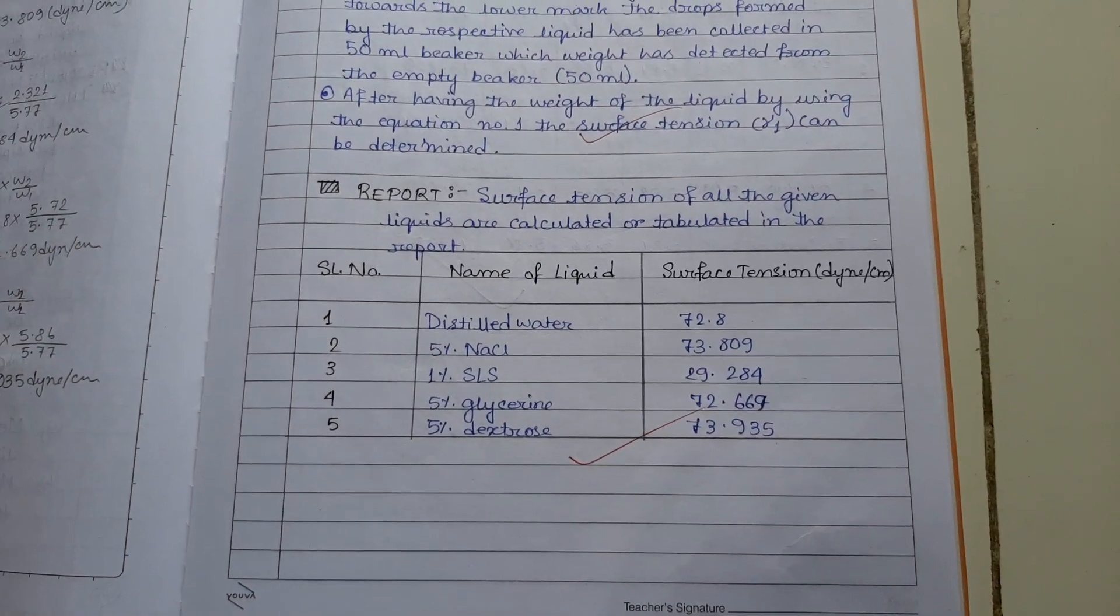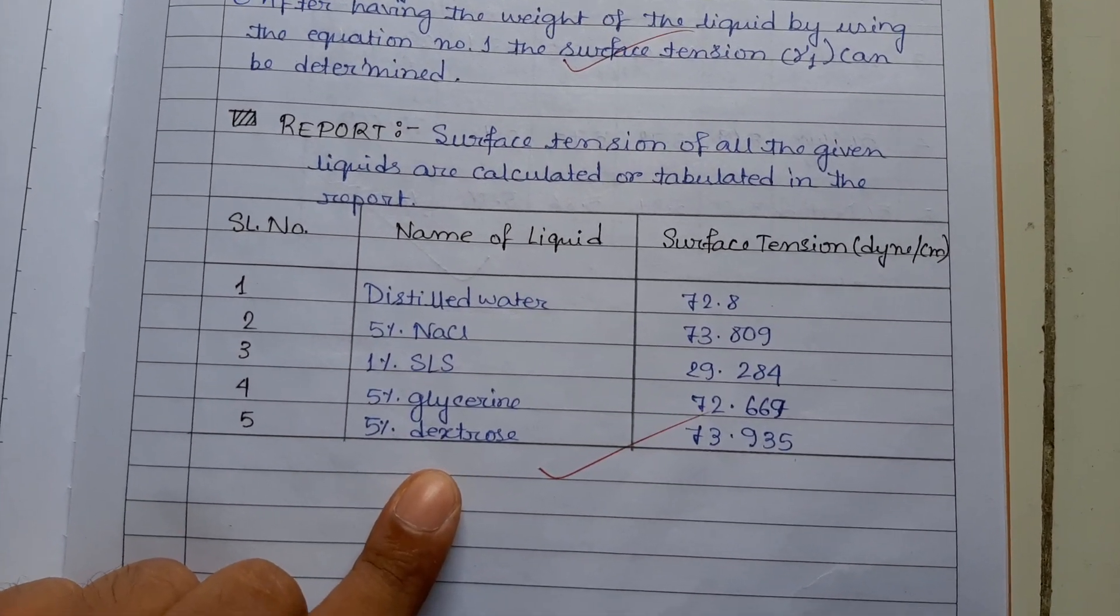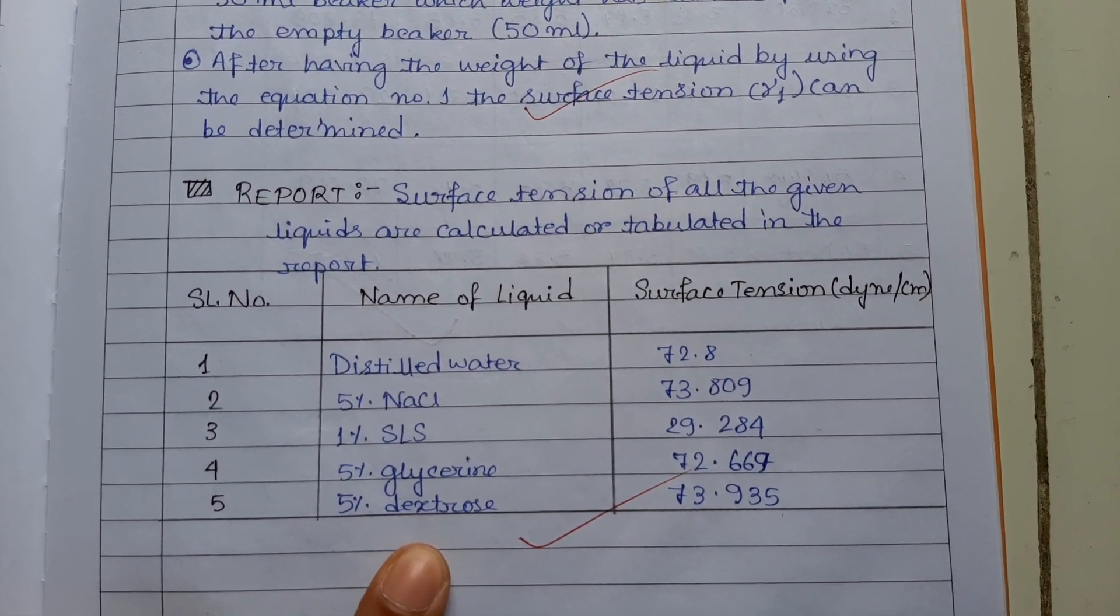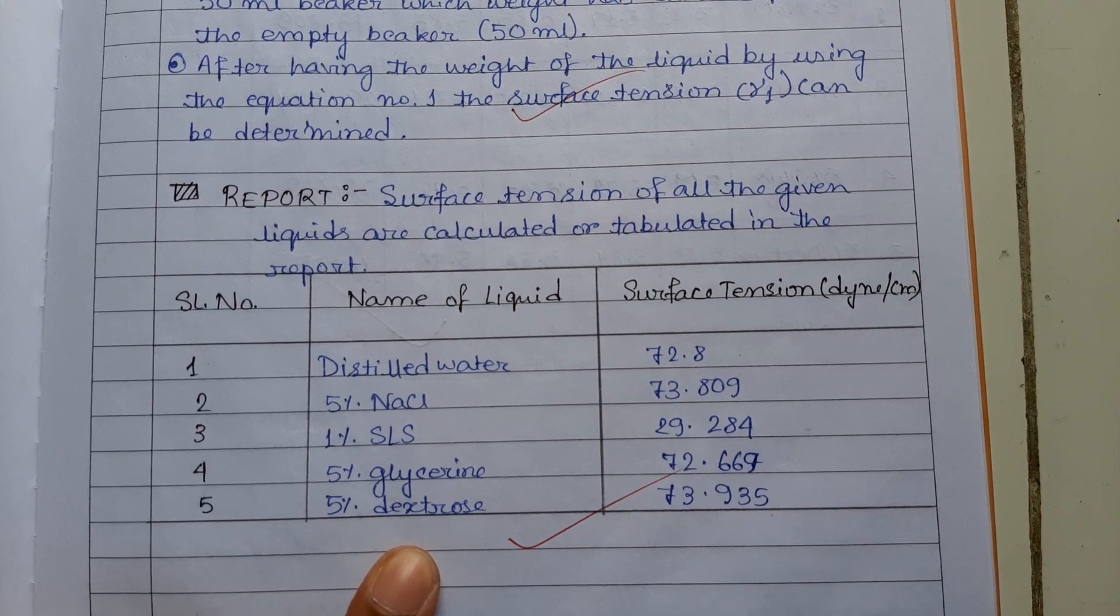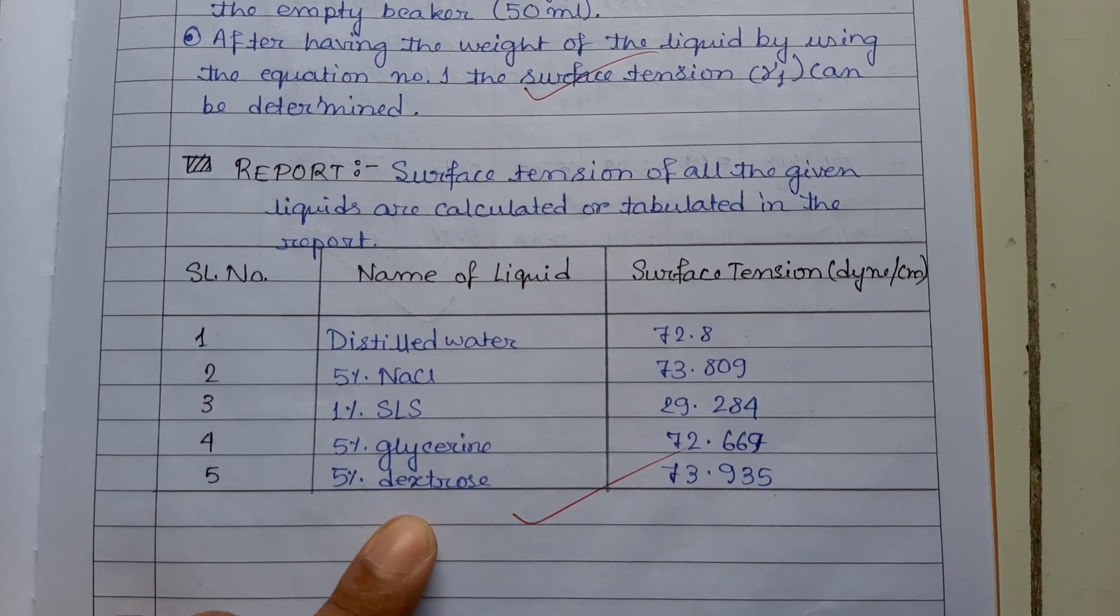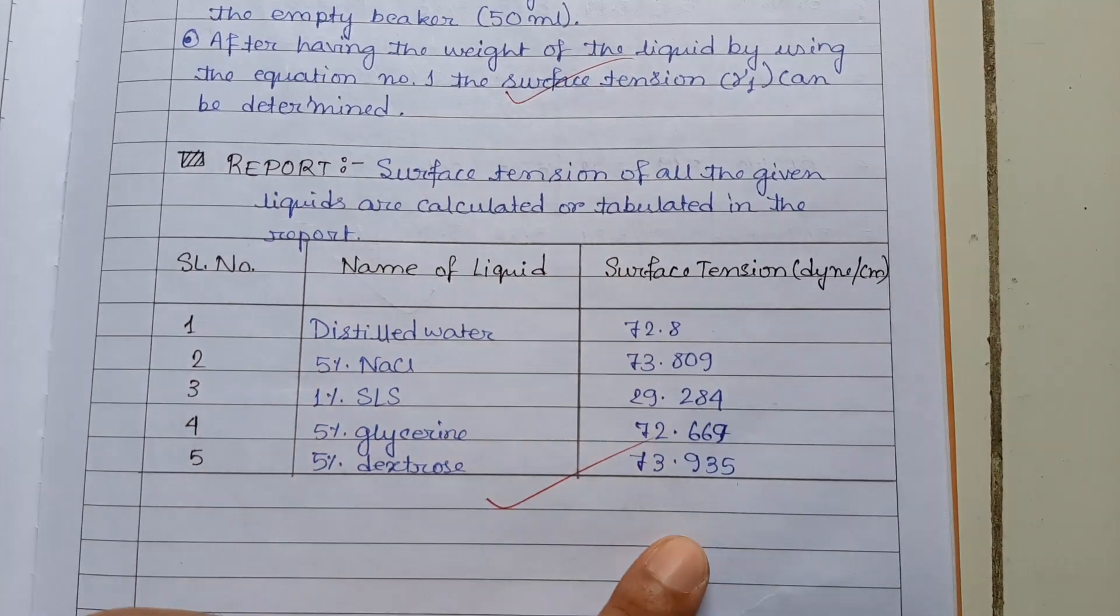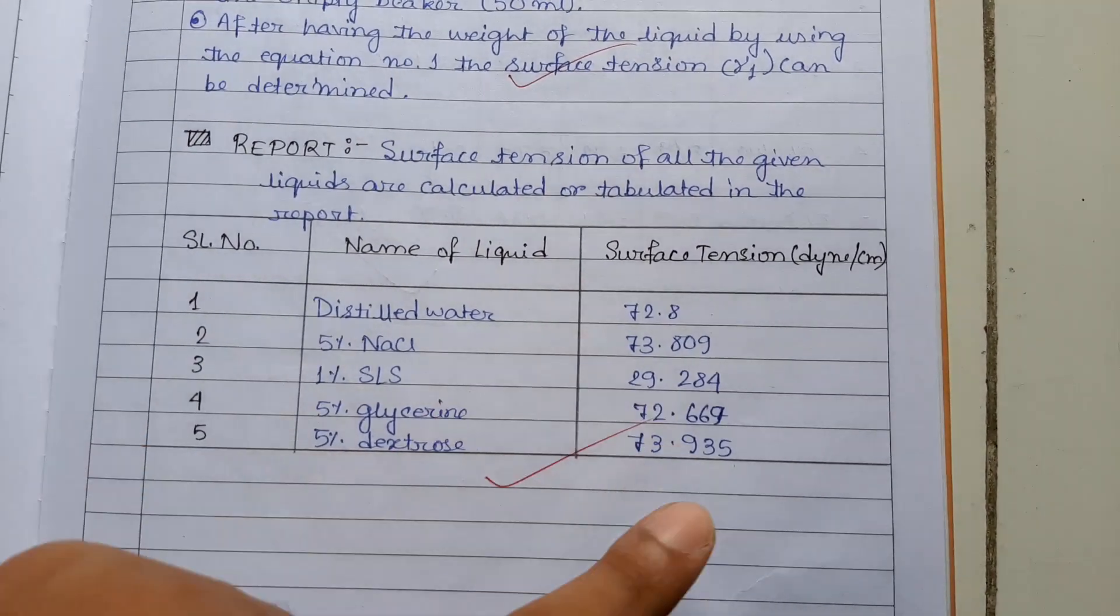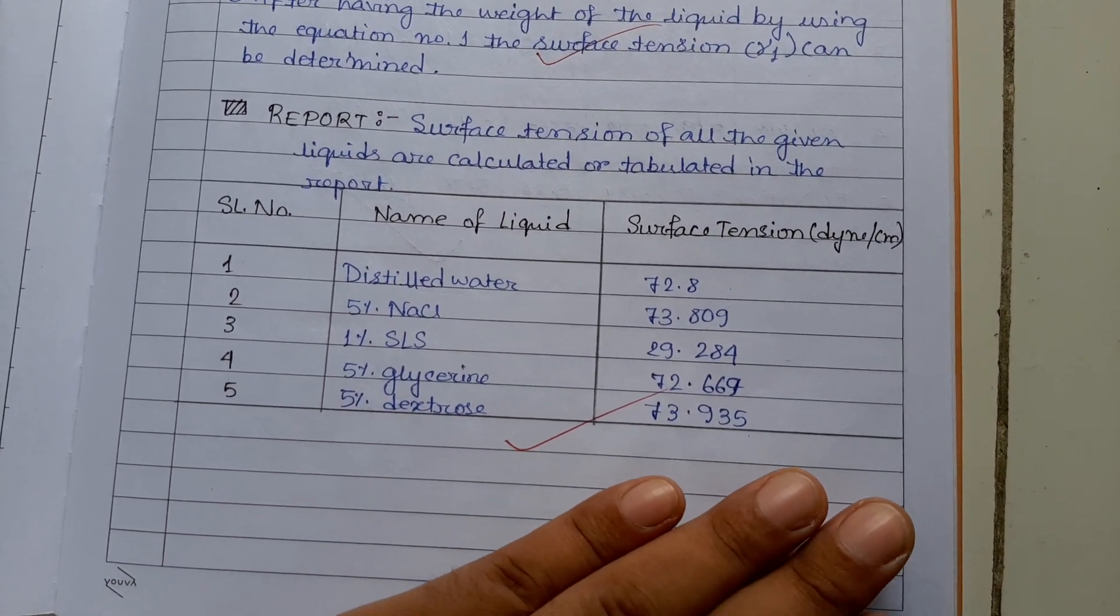After calculation, you have to write the report that surface tension of all the given liquid by using or by following drop weight method. That is, all the values that you got, you have to tabulate. Thank you.